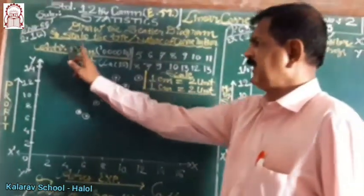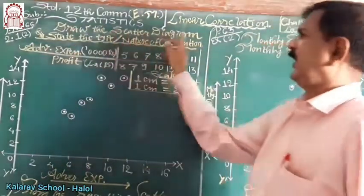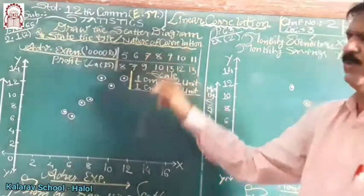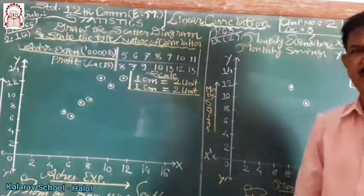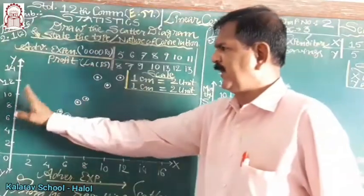Advertisement expense and profit, the data I will give to you. Draw the scatter diagram and discuss or state the types or nature of the correlation between them by taking one variable on x-axis and another variable on y-axis.